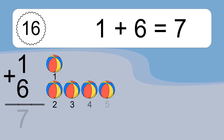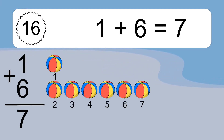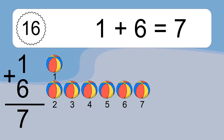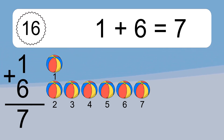1 plus 6 equals what? 1 plus 6 equals 7. Let's count it: 1, 2, 3, 4, 5, 6, 7.